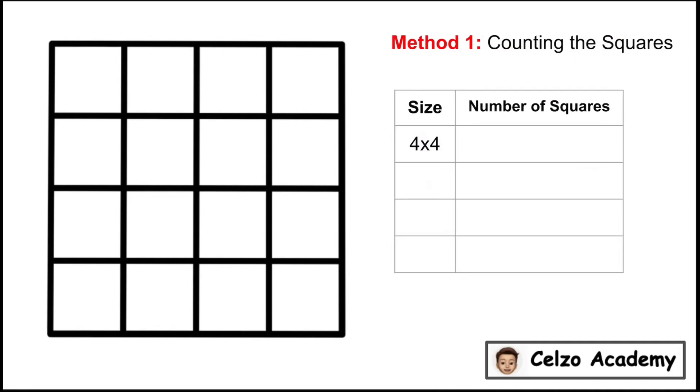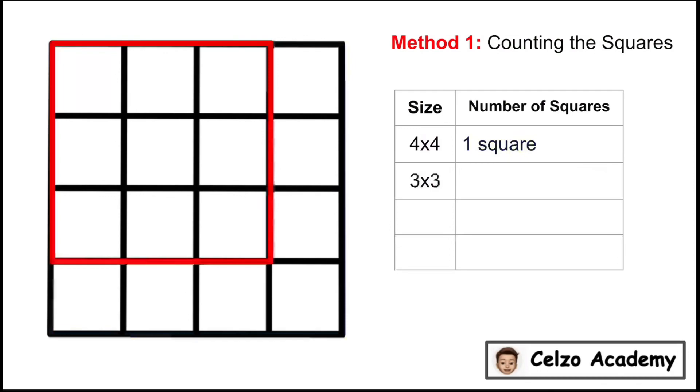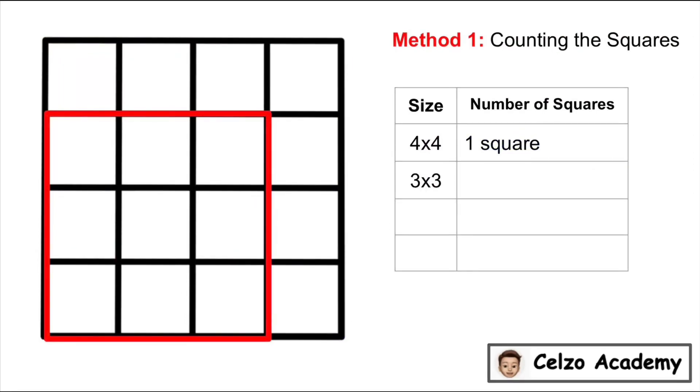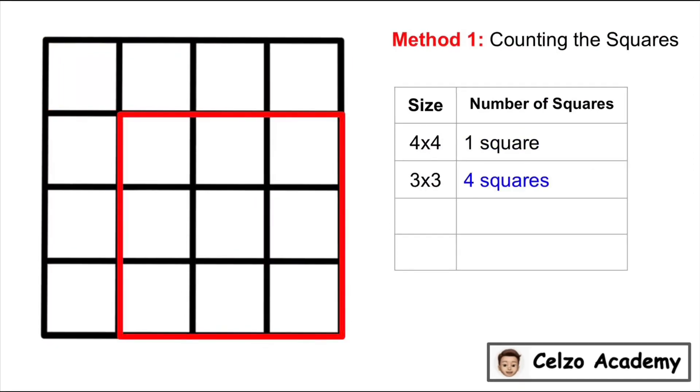Let's begin with a 4x4 grid. How many 4x4 grid can we form? There's only one. Now let's count how many 3x3 squares. How many 3x3 squares do you think can we have? 1, 2, 3, and 4. There's 4 squares that are 3x3 in size.